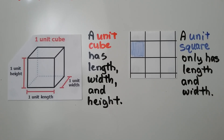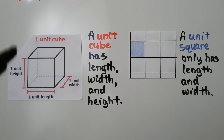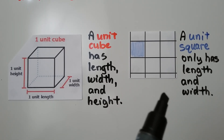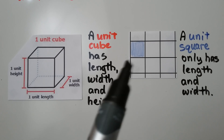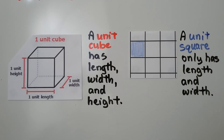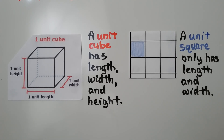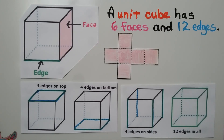A unit cube has length, width, and height — it is three-dimensional. A unit square has only length and width, making it two-dimensional. A unit cube has six faces and twelve edges.